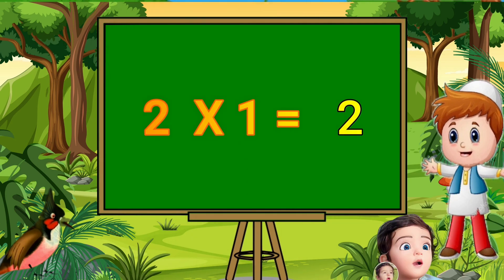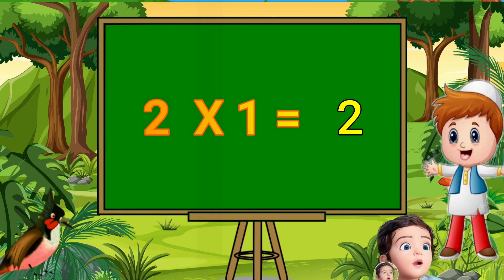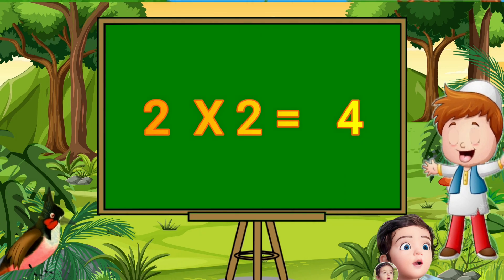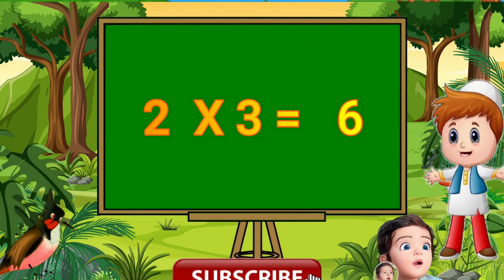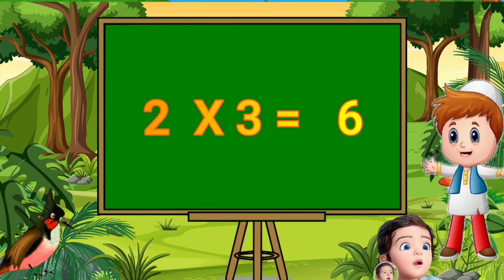Two ones are two. Two ones are two. Two twos are four. Two twos are four. Two threes are six. Two threes are six.